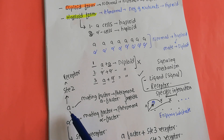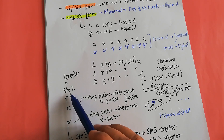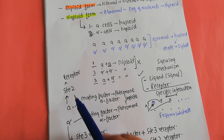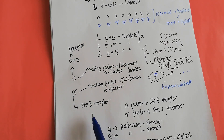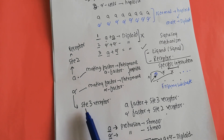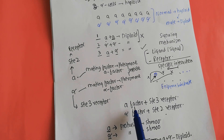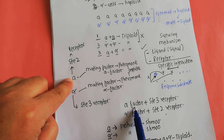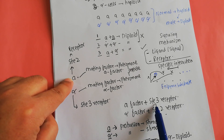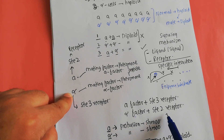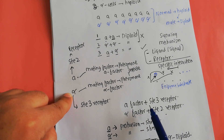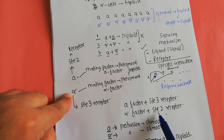The A cell produces a specific receptor on its surface known as the SDE2 receptor. The alpha cell produces a specific receptor on its surface known as the SDE3 receptor. The a-factor produced by the A cell can only interact with the SDE3 receptor, and the alpha-factor produced by the alpha cell can only interact with the SDE2 receptor. This means the receptor for the a-factor is present on the alpha cell, and the receptor for the alpha-factor is present on the A cell.